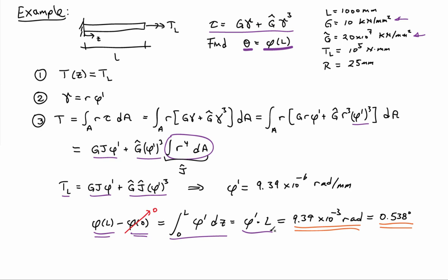And I find out I get an end rotation of 9.39 times 10 to the minus 3 radians. So sometimes people call that a milliradian. And if you convert that to degrees, you get roughly half a degree.